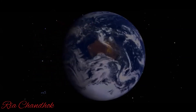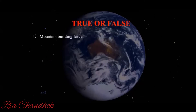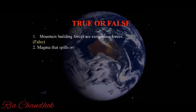Now let's identify which statements are true or false. First: mountain building forces are exogenous forces — this is false, as mountain building forces are endogenous forces, which are internal processes. Next: magma that spills onto the surface of the earth is called lava — this is true. Magma is the term when it is inside the earth, but when it spills onto the surface it is known as lava.